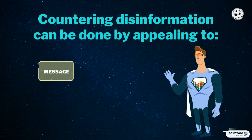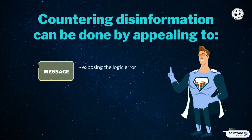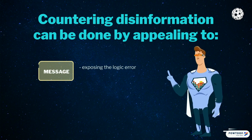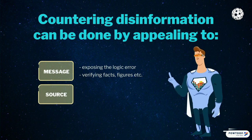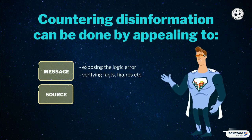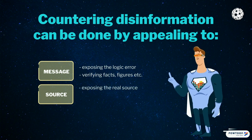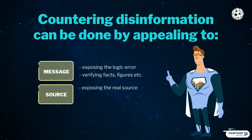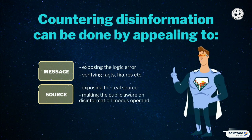Countering disinformation can be done by appealing to the message. When attempting to counter the effect of disinformation, one must first focus on the message and expose any error of logic it is based on. Any facts or figures used as arguments should be verified and exposed if false. Most often, the primary source of disinformation remains hidden as the information is rolled through different fake news sites, blogs, and social media accounts. Exposing the primary source is a useful step forward. Also, exposing the way propaganda and disinformation works can help the public better understand and become resilient to further disinformation.